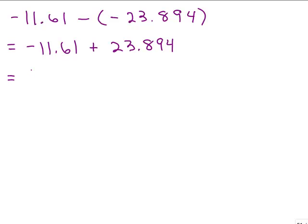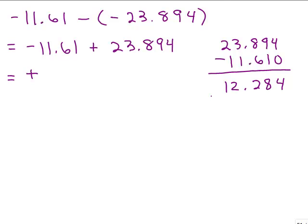So we go over to the side. If you're adding numbers with different signs, you need to take their difference. So we have 23.894. That's the big number minus the small number. Put in that extra zero. Subtract and our answer was positive. So I don't need to write that positive sign. It's just 12.284.